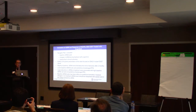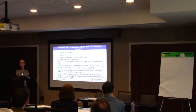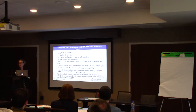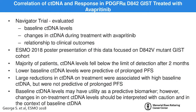Suzanne George presented at ESMO in 2018, reporting on ctDNA analyses from the Navigator trial in the PDGFRA D842V mutant group receiving avapritinib. The majority of patients' ctDNA levels fell below the limit of detection after two months. Importantly, lower baseline ctDNA levels were predictive of prolonged progression-free survival, whereas large reductions in ctDNA on treatment were associated with high baseline ctDNA but were not predictive of prolonged progression-free survival.